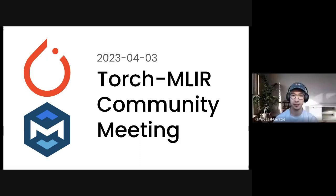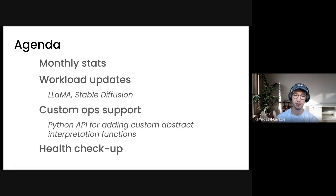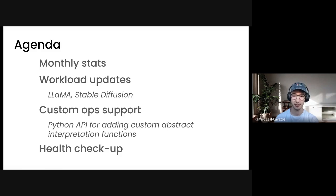Welcome everyone to the TorchMLIR community meeting for April. This is the agenda for today. We'll go over our monthly stats, then Anoush will give us some updates on the work his team has been doing on LLaMA and stable diffusion. I will talk about custom op support, which we now have a nice story for in TorchMLIR — the Python API has been updated. Lastly, we'll go through our routine health checkup.